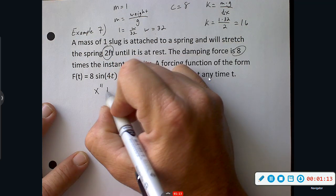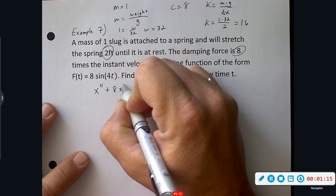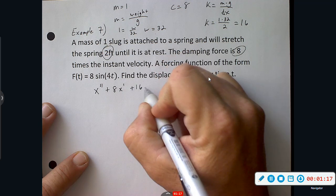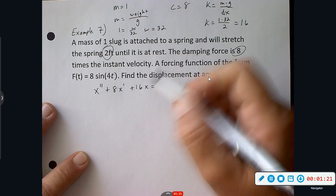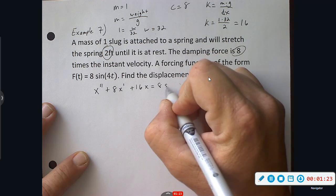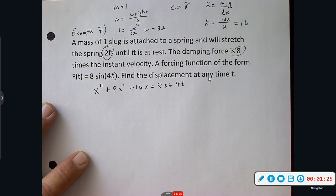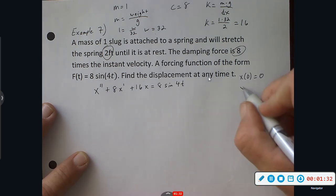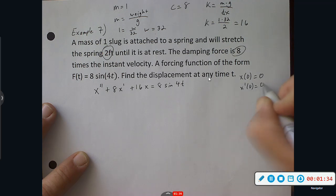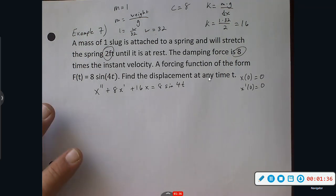X double prime plus 8X prime plus 16X equals 8 sine 4T. So we have an instant velocity. Here in our case, we're starting from a position of zero, our instant velocity is also zero. Isn't that nice, that'll help us a little bit.